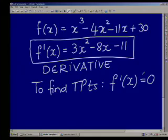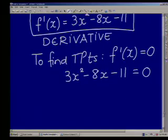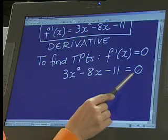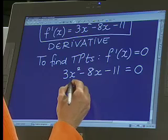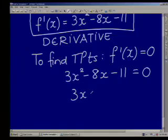All right. So we're going to take 3x squared. Okay. So there's your derivative. And when you equate that derivative to 0, we're now going to find the x of the turning points. So that will be 3x² - 8x - 11 = 0.